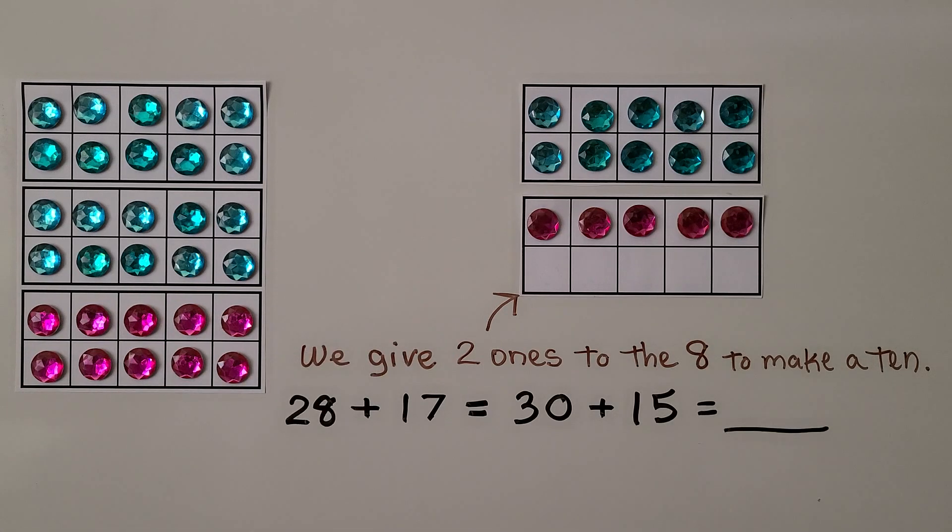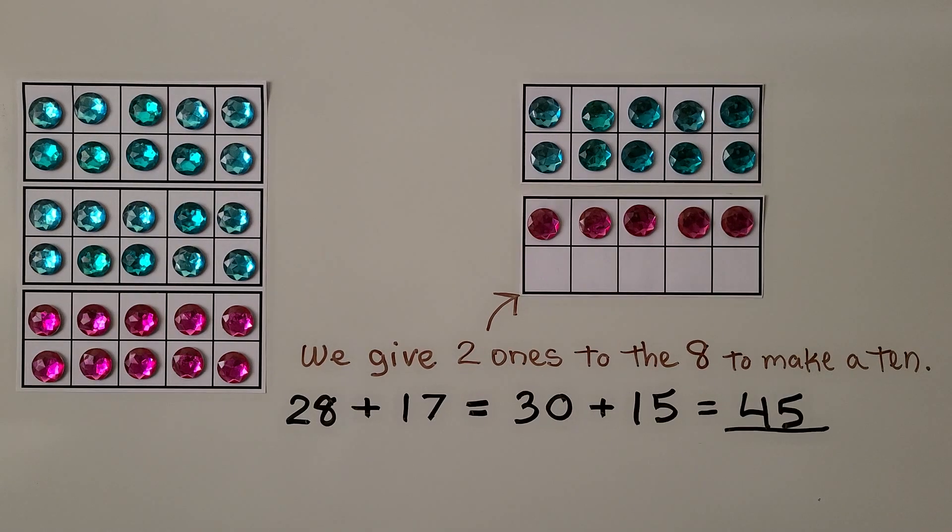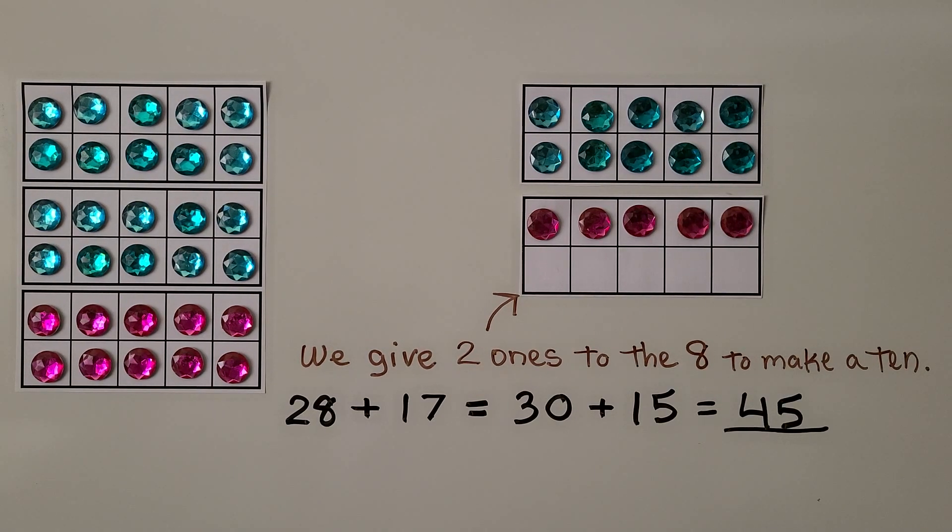Now it's easier to add 30 plus 15. We have three tens, four tens, and five ones. 28 plus 17 is equal to 30 plus 15, which is equal to 45.